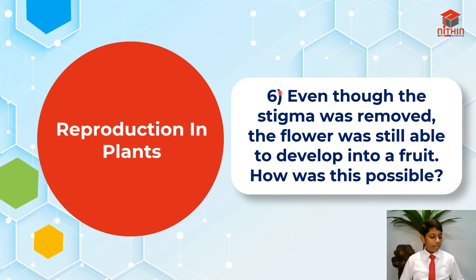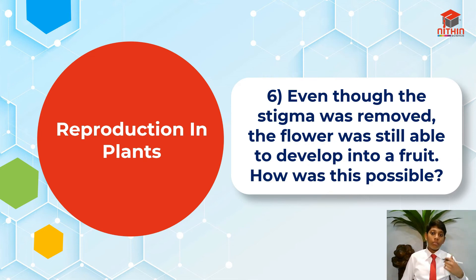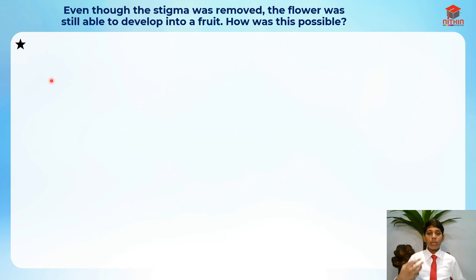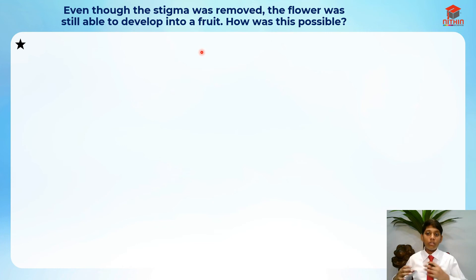For segment six, here's an important exam question: even though the stigma was removed, the flower was still able to develop into a fruit — how was this possible? One possible answer is that the flower had already been pollinated before the stigma was removed. This type of question is extremely important and will definitely come out in the exam. They might also ask what if the anther, ovary, or petals were removed.